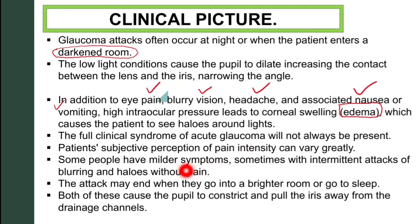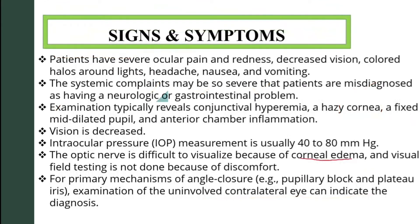The attack may end when the patient goes into a brighter room or goes to sleep. Both of these cause the pupil to constrict and pull the iris away from the drainage channels. Signs and symptoms include: severe ocular pain, redness, decreased vision, colored halos around lights, headache, nausea, and vomiting.